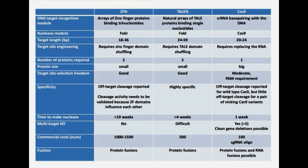As a comparison, the target length for ZFN is 18 to 36 base pairs; for TALEN it is 24 to 59; and for Cas9 it is 20 to 24. The nuclease module in ZFN and TALEN is FokI, but for Cas9 it is the Cas9 complex itself. The protein size required for ZFN and TALEN are both small, but for Cas9 it is large. The specificity of ZFN is a little uncertain, as off-target cleavage has been reported. TALEN is highly specific. Cas9 can have some off-target cleavage, but for a pair of nicking Cas9 variants this occurs only when there is high homology between the guide RNA and an off-target sequence.